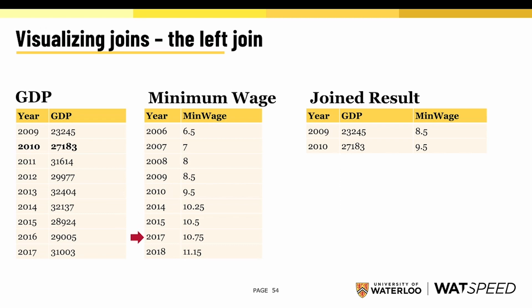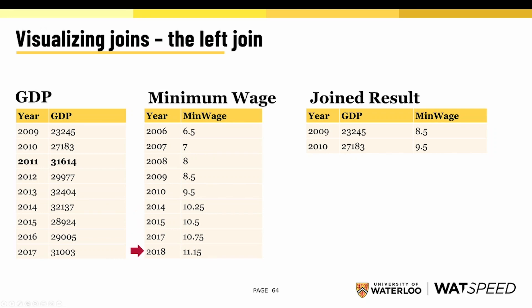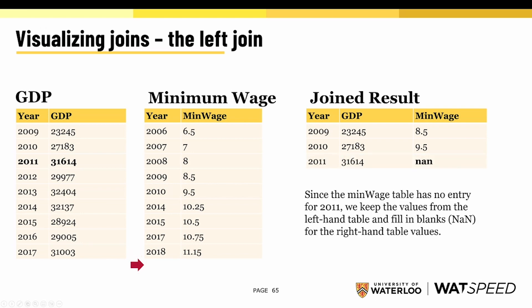There are no more matches, so we move on to the next row in our GDP dataframe and repeat the same process. Notice this time there's no 2011 row in our minimum wage data. So our final output for 2011 is going to be the value 2011, the GDP, and then minimum wage will be substituted with NaN. Because this is a left join, we keep the values from the left-hand table and fill in blanks for the right-hand table's values.